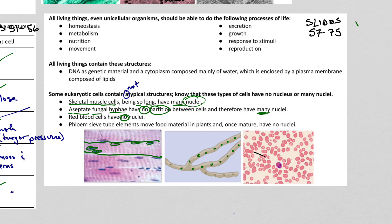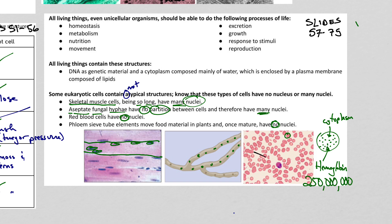Red blood cells are the first no-nucleus exception. A red blood cell is just a membrane with a lot of cytoplasm inside — some fluid that everything floats in, and a lot of hemoglobin proteins. A typical red blood cell has about 250 million hemoglobin proteins in it, and each hemoglobin protein has four smaller proteins on it, which means there are one billion individual hemoglobin subunits in there.